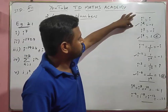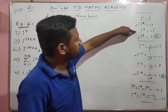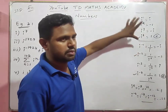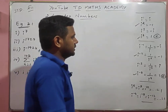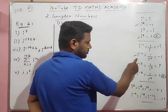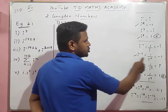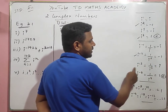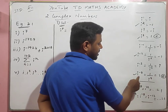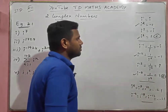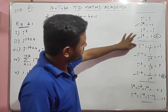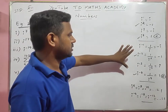i power 1 equals i; i power 2 equals minus 1; i cubed equals minus i; i power 4 equals 1. This is explained in the previous video. Similarly, i power minus 1 equals minus i; i power minus 2 equals minus 1; i power minus 3 equals i; i power minus 4 equals 1.